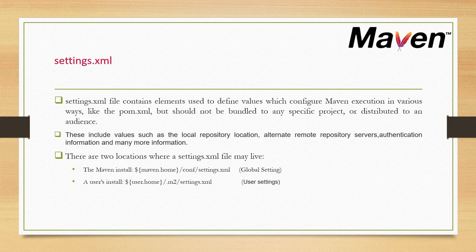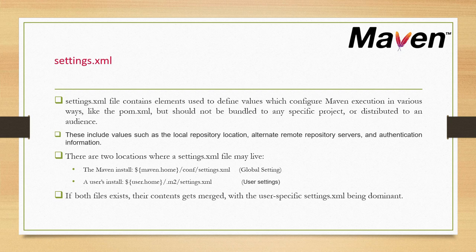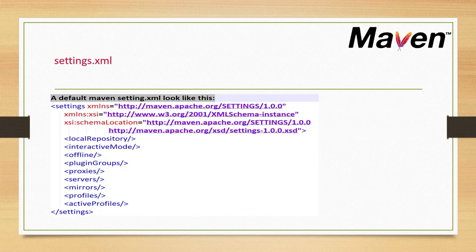Now if both files exist — one for global settings and one for user settings — their content gets merged, with the user-specific settings.xml being dominant and having the highest priority. Let's look at the default Maven settings.xml. I'll go to the Maven installation directory to show you.